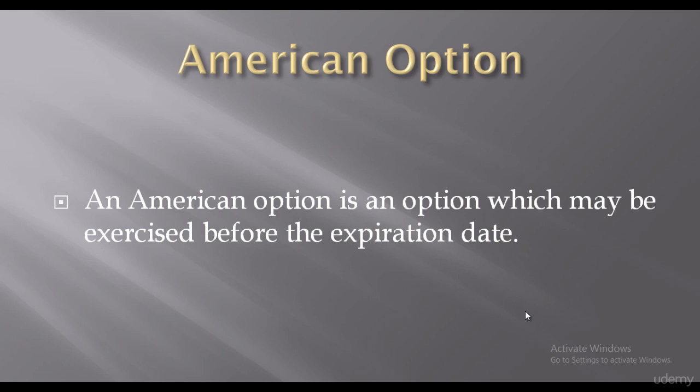An American option is an option which may be exercised before the expiration date. That is, if you bought a call option, you don't need to wait till the expiration date. You can exercise it at any time — on day one, day ten, day one hundred — and sell your shares on that call option. Whatever the expiration date is, you can exercise that option any day. When you can do this, that is known as an American option.